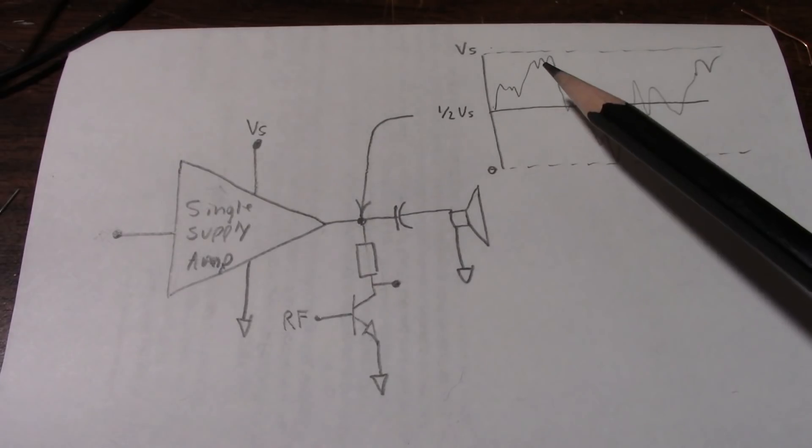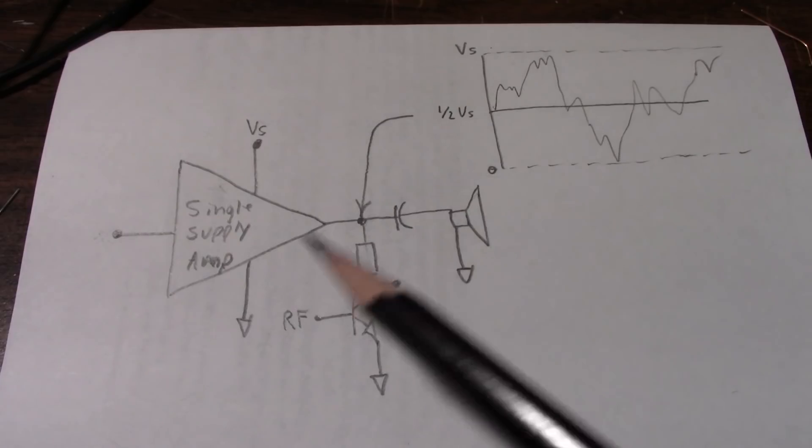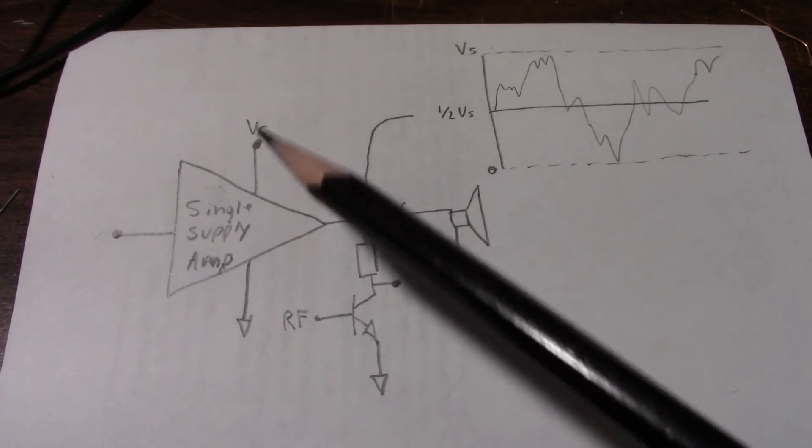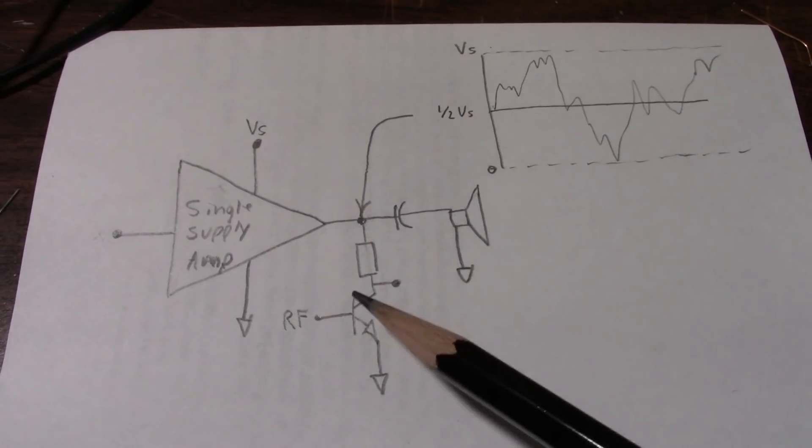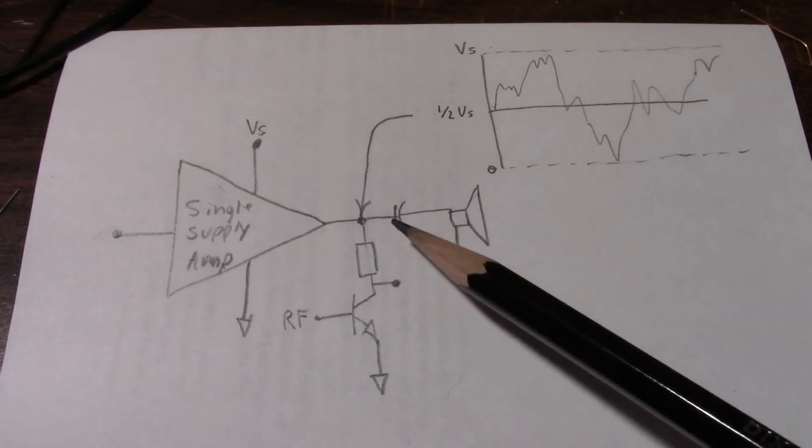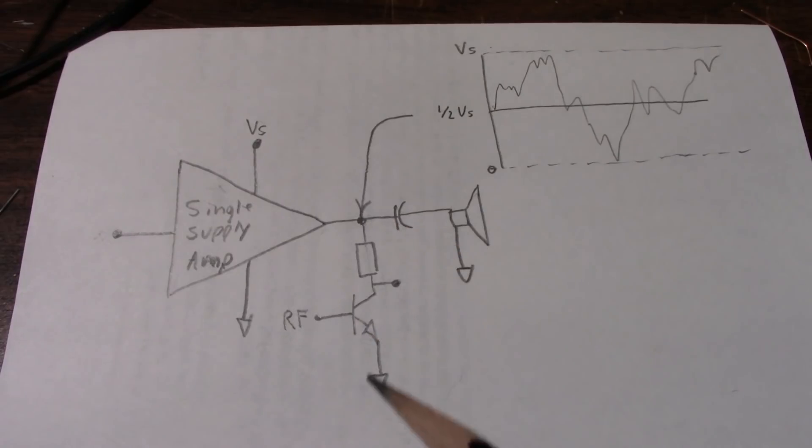So the most positive peaks would be close to the supply voltage and the lowest peaks would be close to zero volts. It would have to work within the supply voltage rails. So now I'm thinking, why don't I connect a transistor to the output before the capacitor?